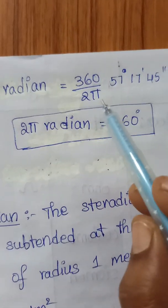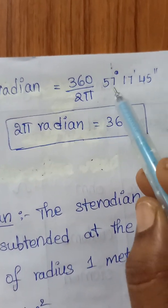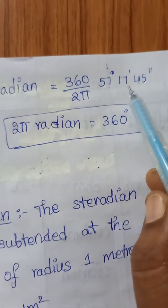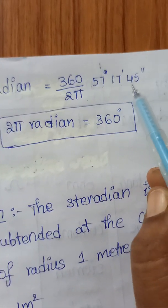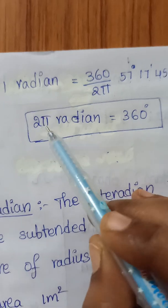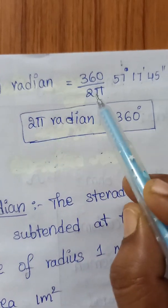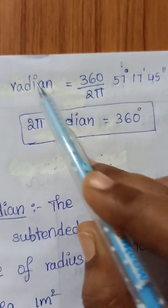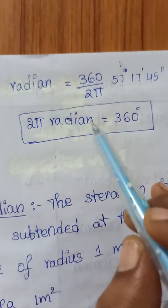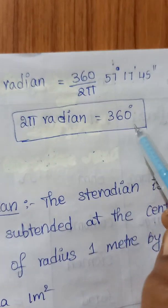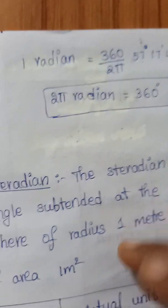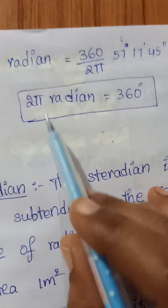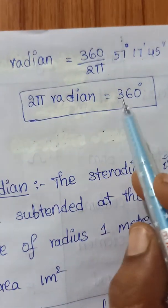One radian is equal to 360 divided by 2π, which is 57 degrees 17 minutes 45 seconds. Cross-multiplying, 2π radians equals 360 degrees. This is very important: 2π radians = 360 degrees.